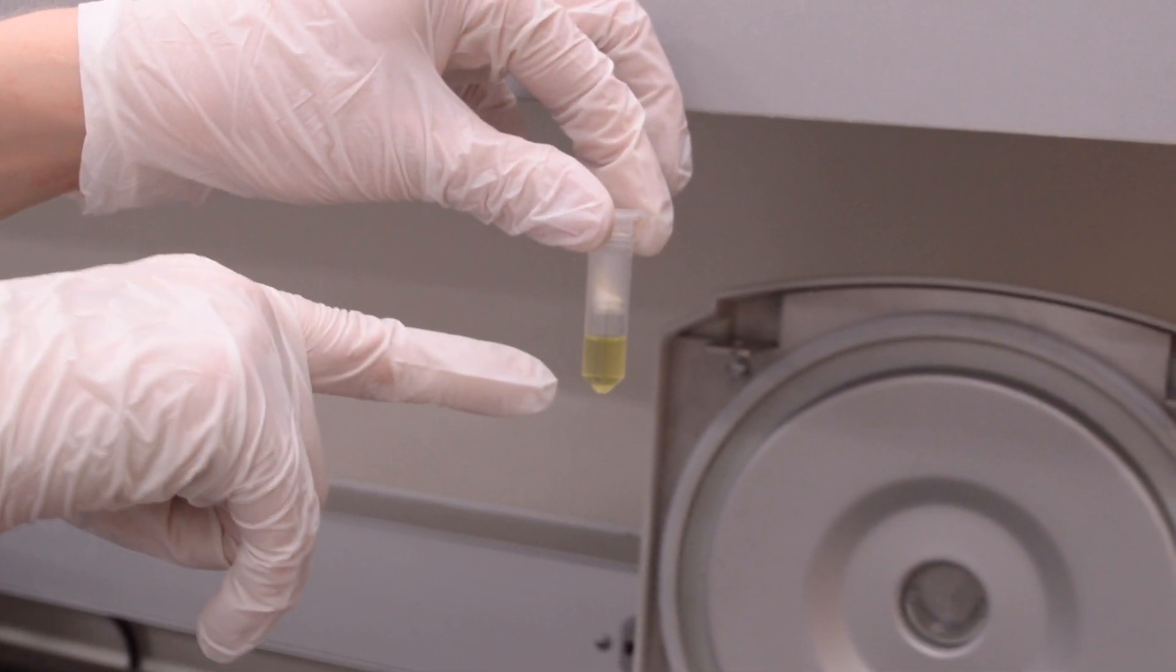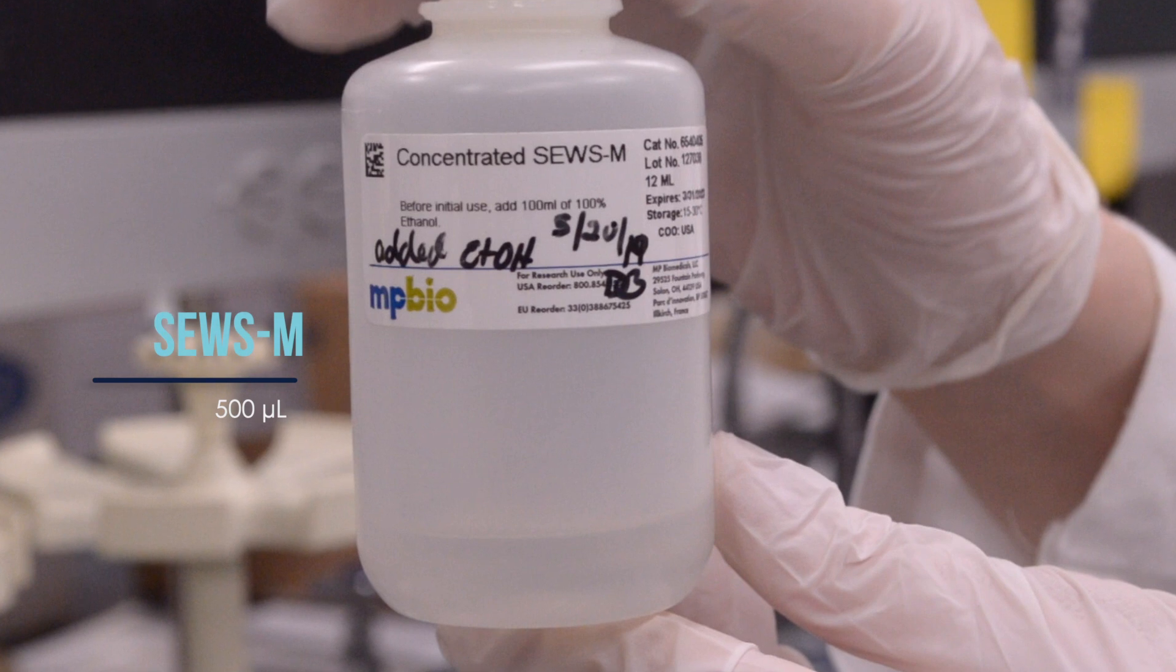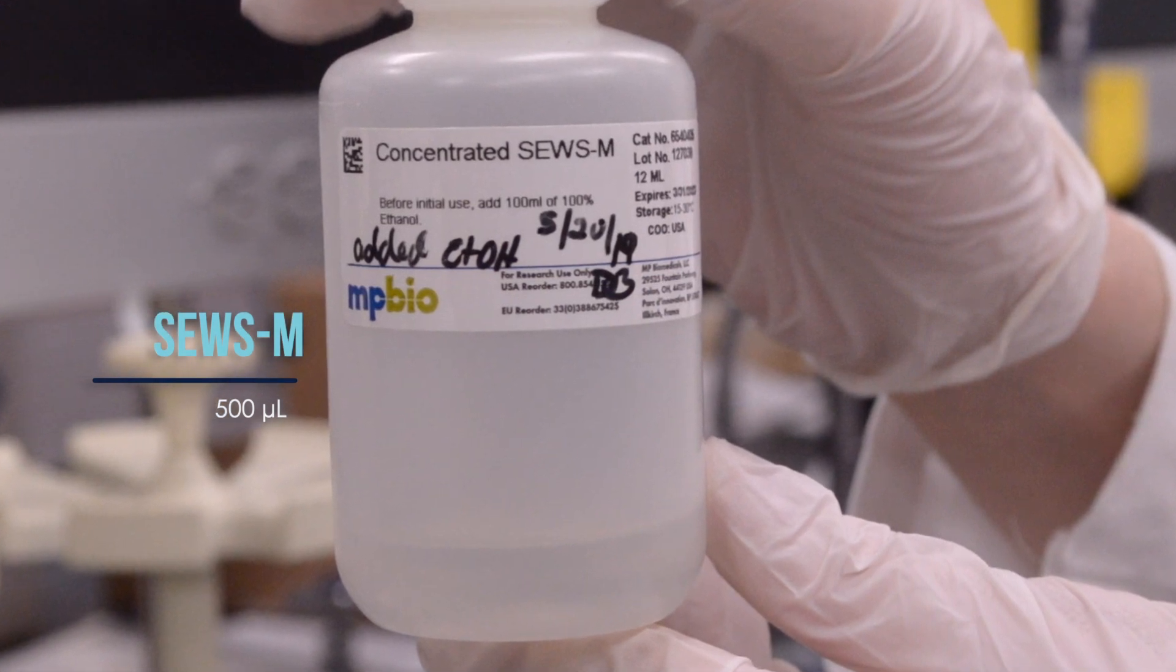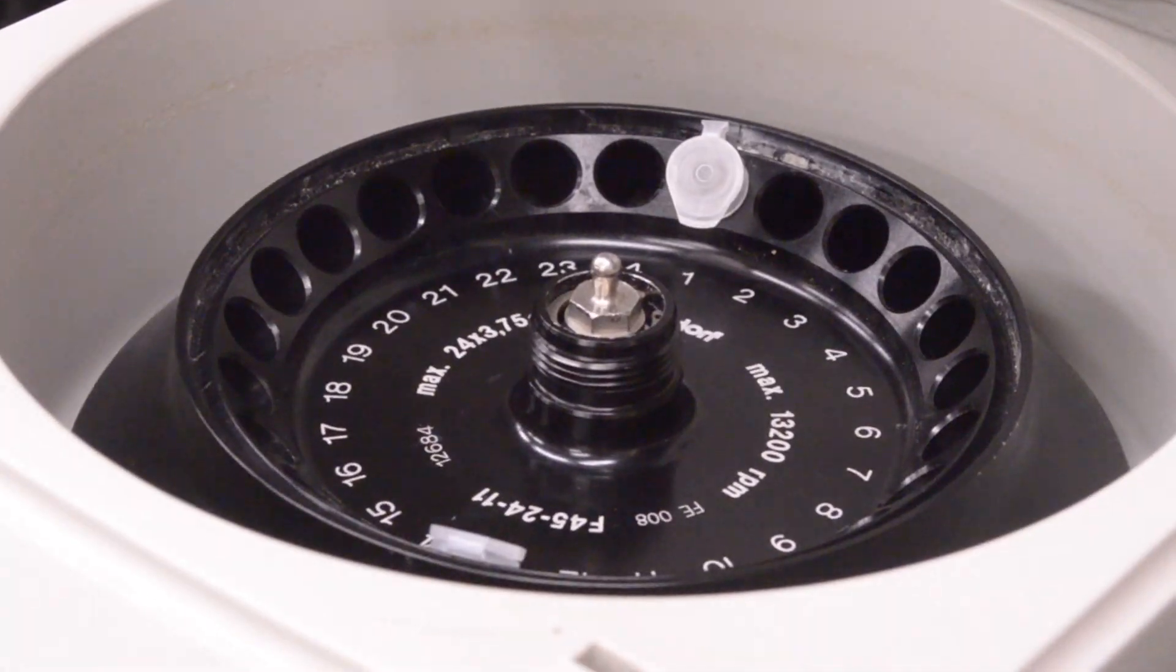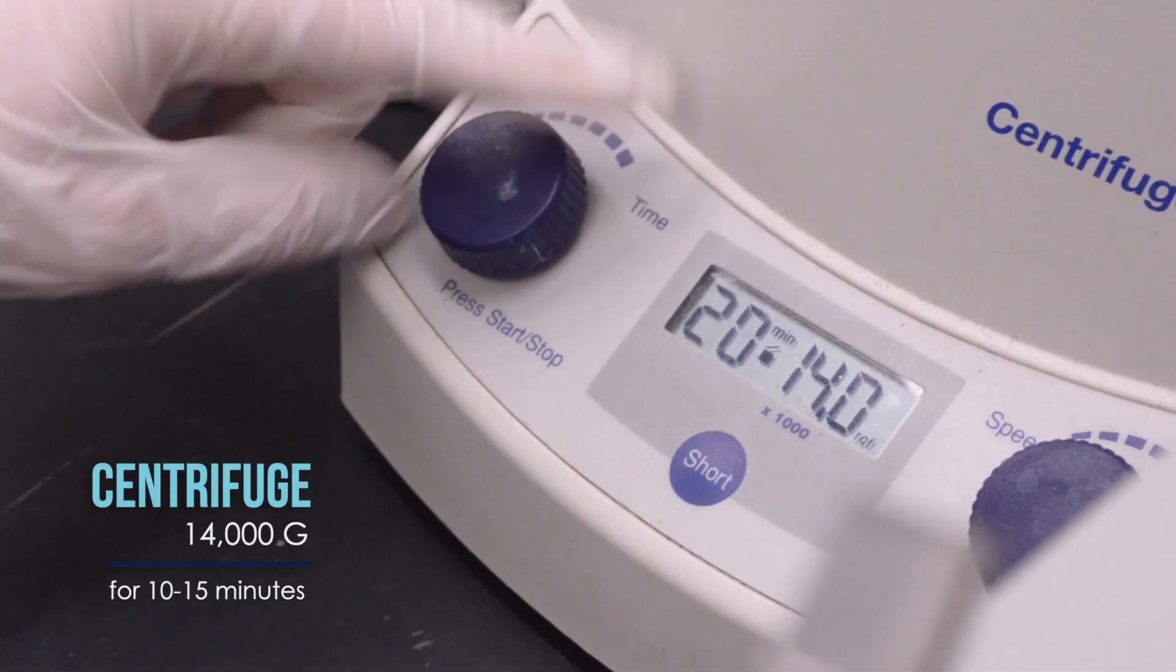Empty the catch tube again and add 500 microliters of SEWS-M to the filter tube to wash the binding matrix. Wait for 2 minutes, then centrifuge the tube at 14,000 g.